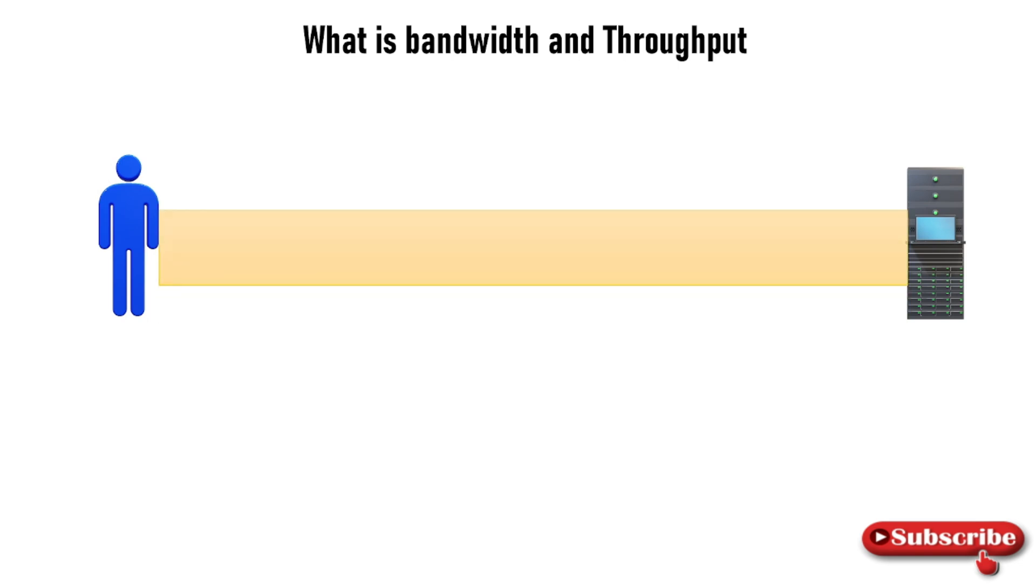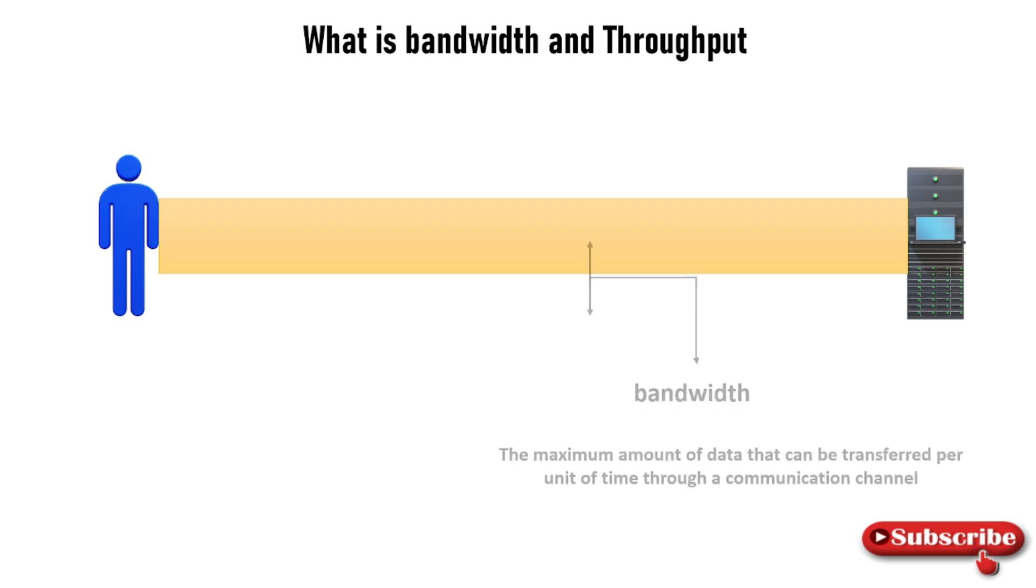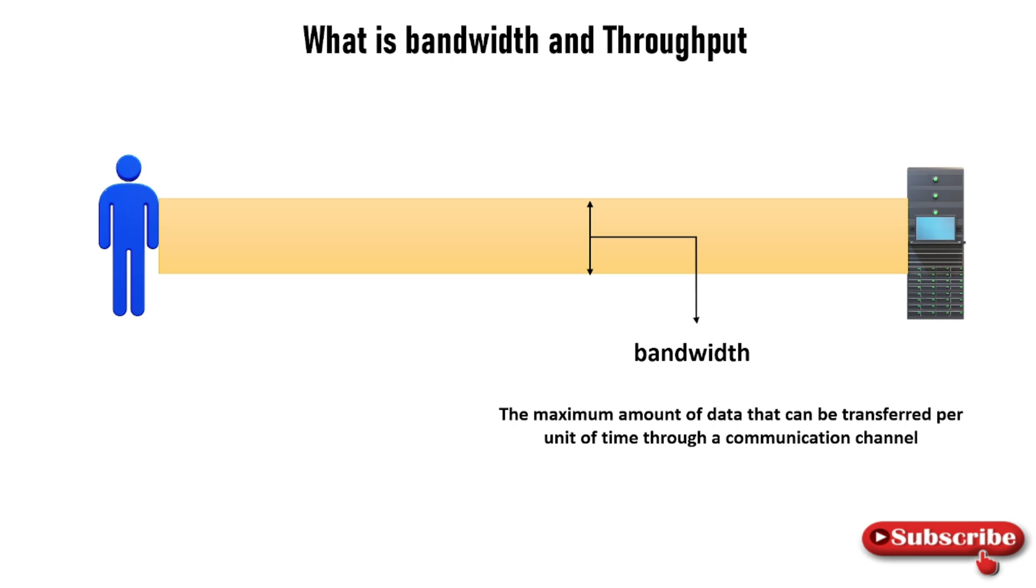Here there is an I/O channel, which is called a communication channel, which is capable of holding 1GB of data or which can handle 1GB of data. The amount of data that it consumes or provides is called bandwidth. So bandwidth is the maximum amount of data that can be transferred per unit of time through a communication channel.